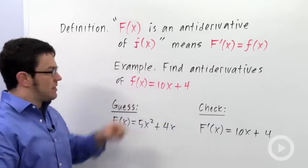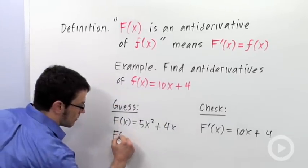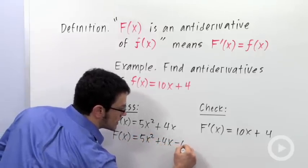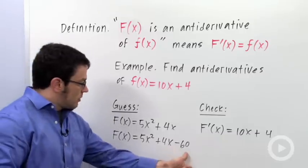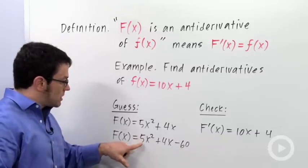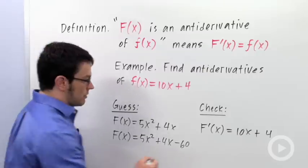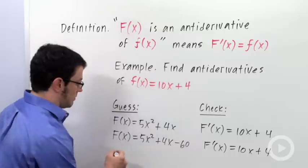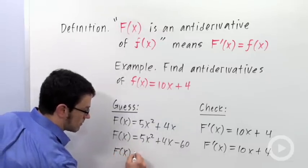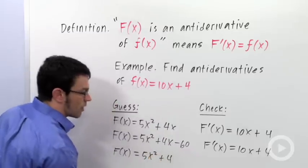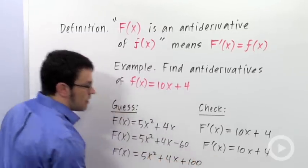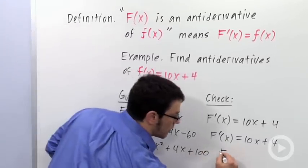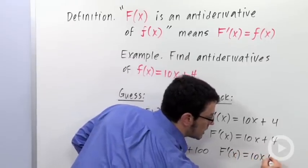So this would be an antiderivative of 10x plus 4. But it's not the only one. 5x squared plus 4x minus 60. The derivative of the minus 60 part is just 0. So the derivative will still be 10x plus 4. And another one. 5x squared plus 4x plus 100. Any constant you want to add, the derivative is going to be 0. So the derivative will still be 10x plus 4.